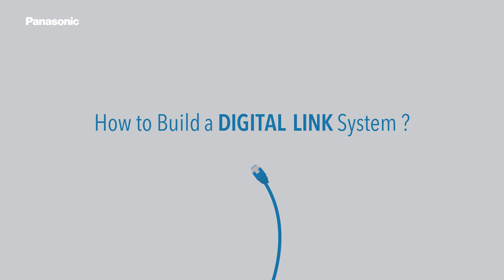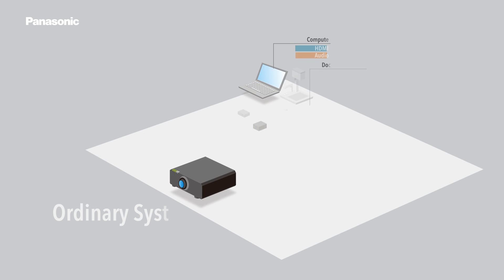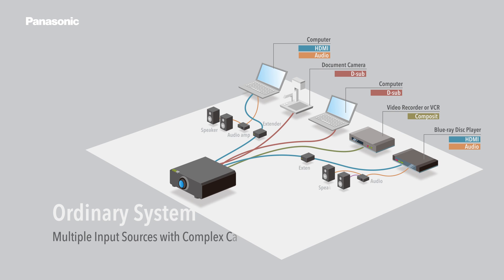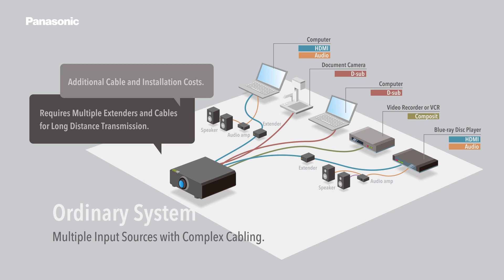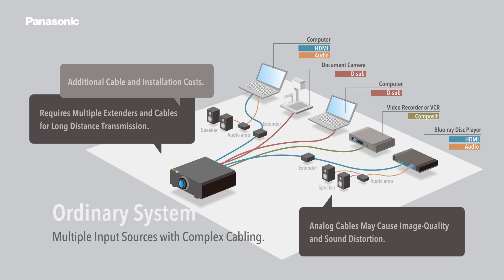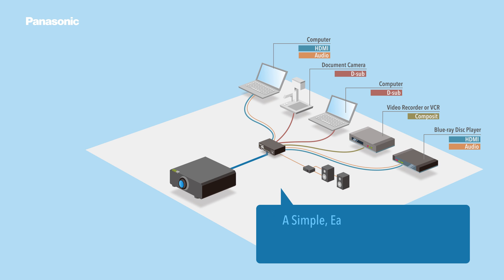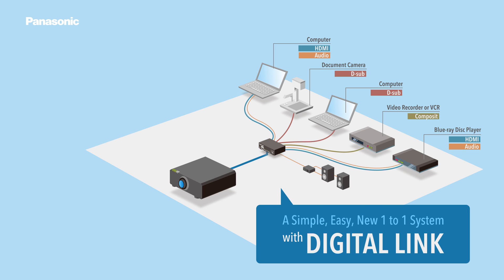How to build a digital link system. Multiple input sources with complex cabling — a simple, easy, new one-to-one system with digital link.